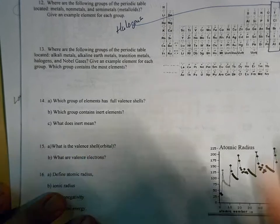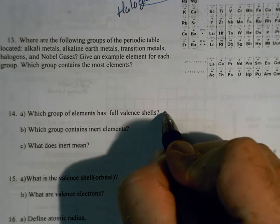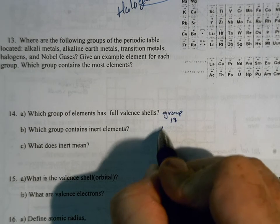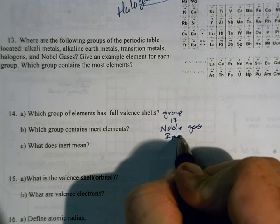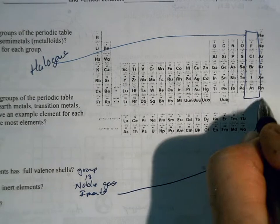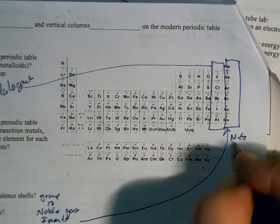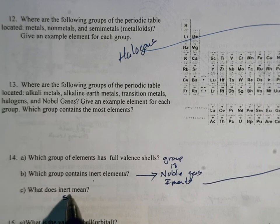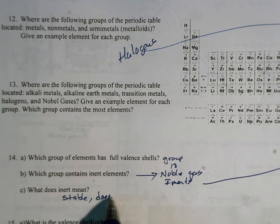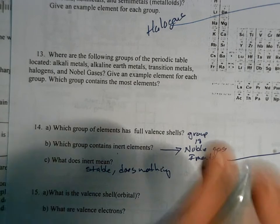Number fourteen: which group of elements has full valence shells? That's going to be group 18 — the noble gases, sometimes called the inert gases because they don't react with anything. What does inert mean? Stable — they do nothing. The noble gases don't need any electrons, so they just mind their own business.